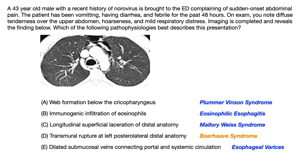Finally, choice E — dilated submucosal veins connecting portal and systemic circulation — refers to esophageal varices. Esophageal varices occur secondary to portal hypertension, so you look for associated conditions like cirrhosis, hepatic encephalopathy, biliary cirrhosis, ascites, peritonitis, and Budd-Chiari syndrome. Clinically you'd expect hematemesis, coffee-ground emesis, hematochezia, and melena.